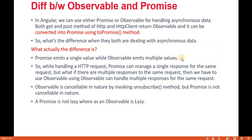In Angular we can use either promises or observables to handle asynchronous data. The GET and POST methods of HttpClient return observables, and internally they can be converted to promises using the .toPromise() method. The key difference is: a promise emits a single value while an observable emits multiple values. While handling HTTP requests, promises can manage only a single response, but if there are multiple responses for the same request, we need to use observables.